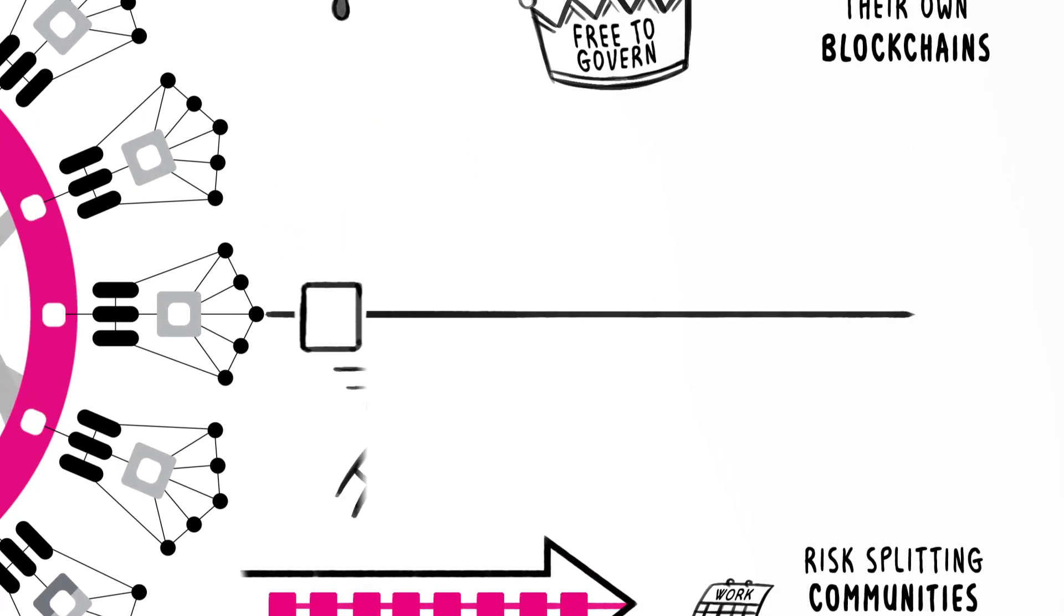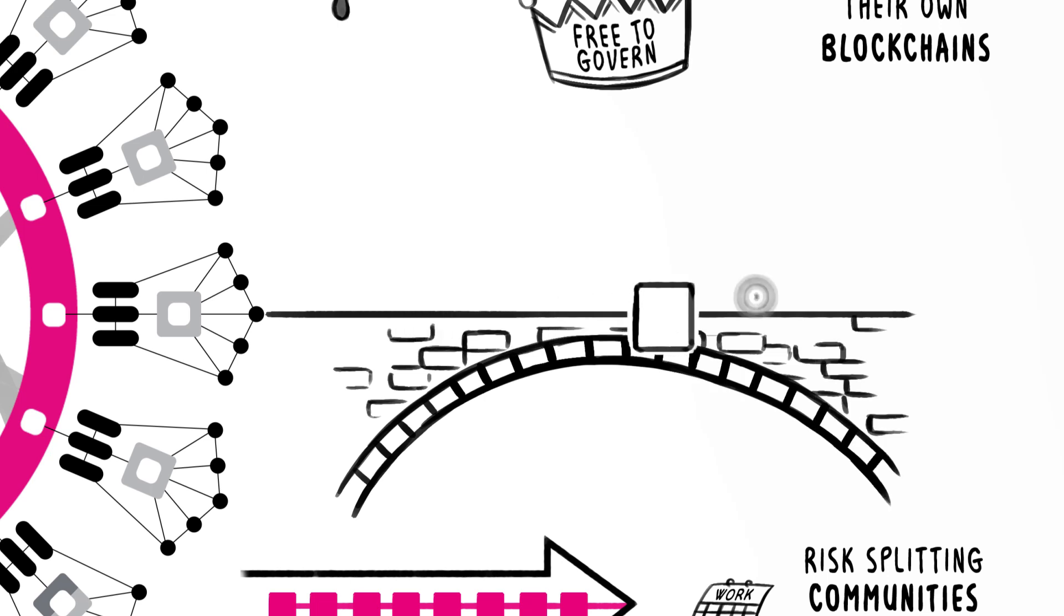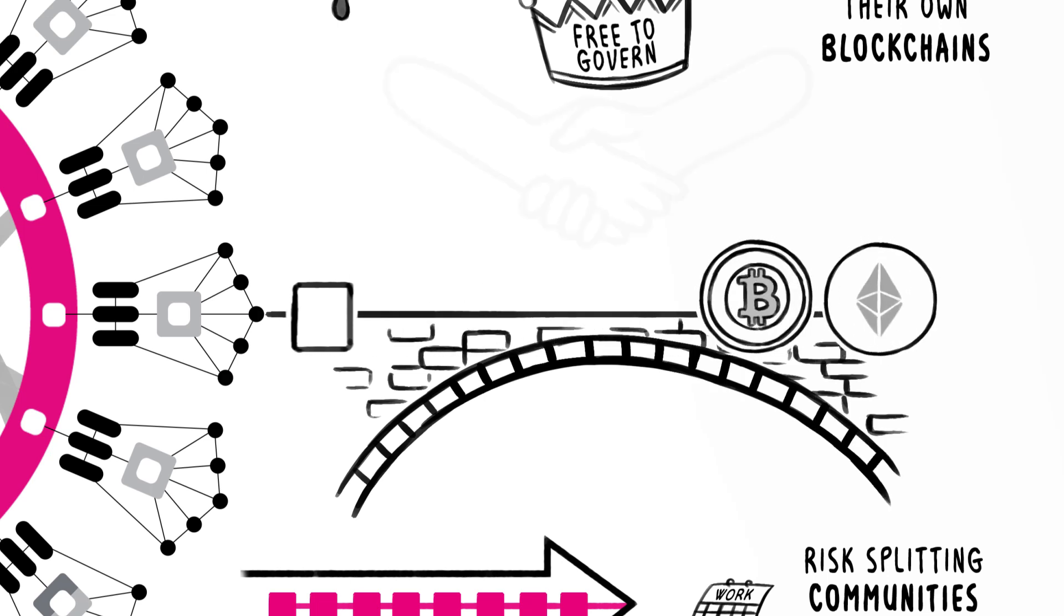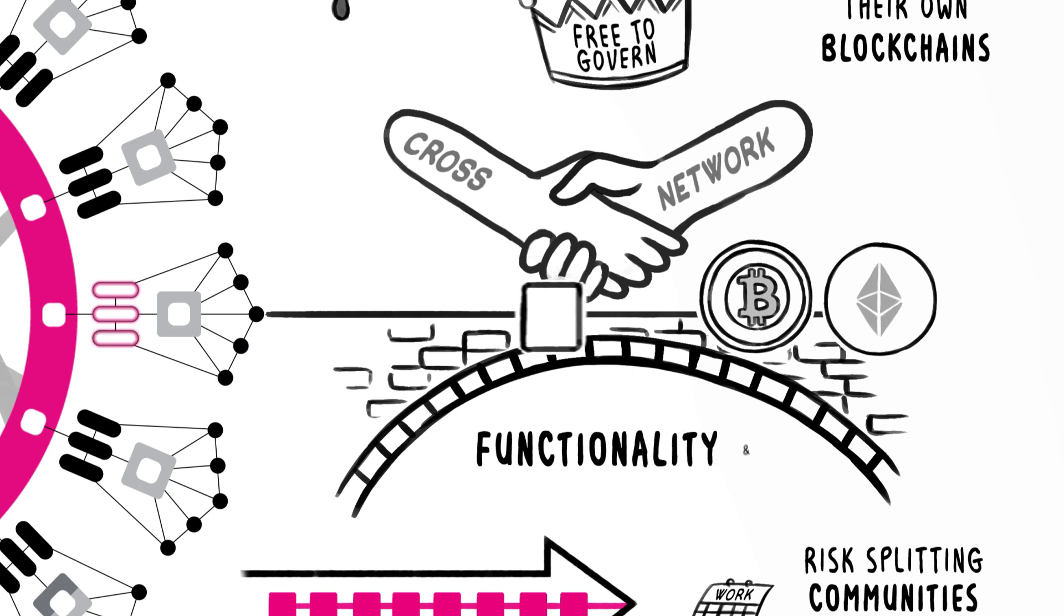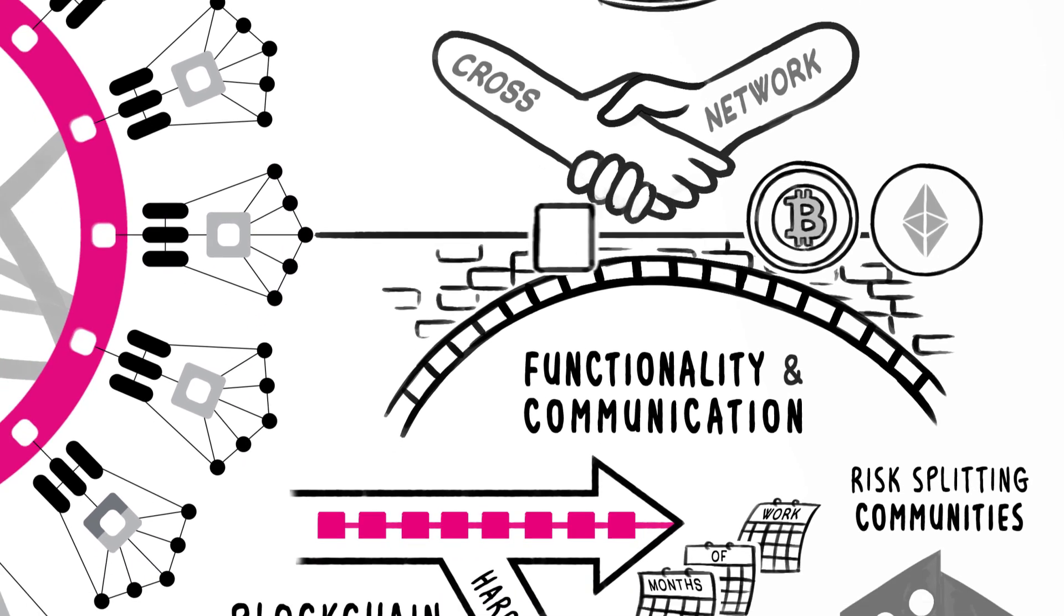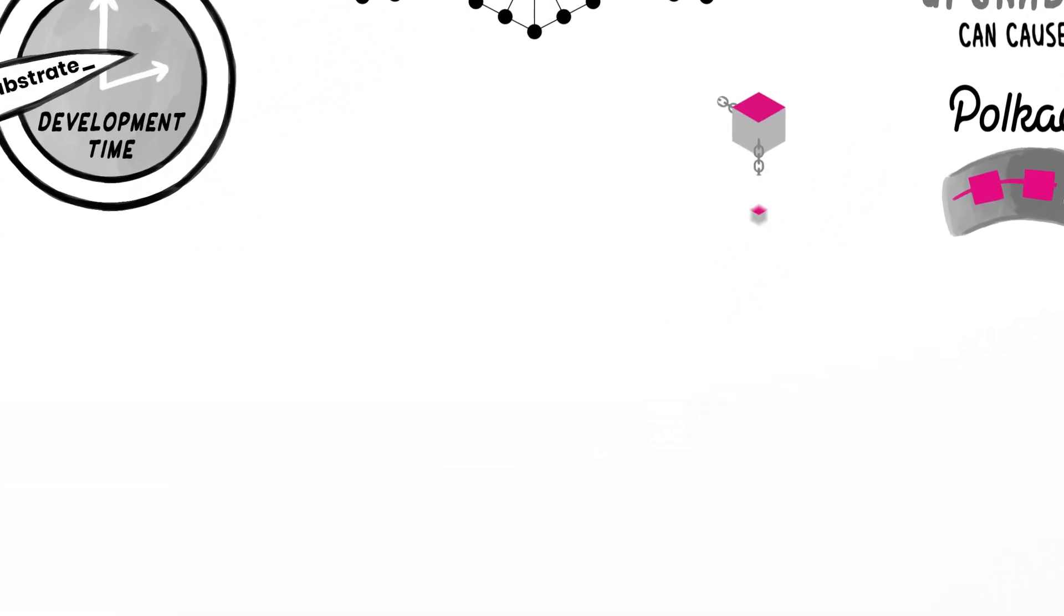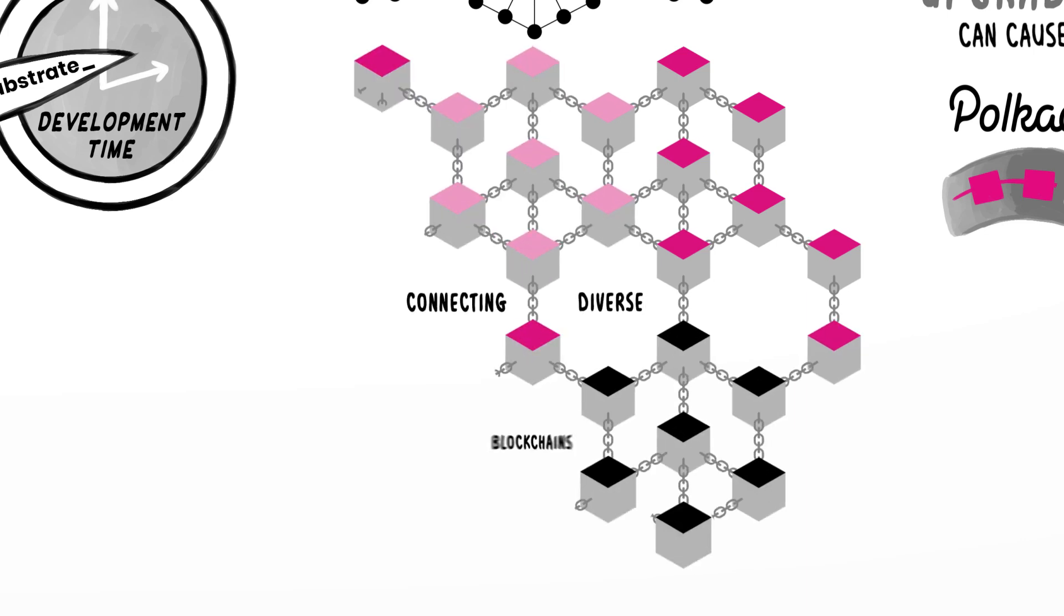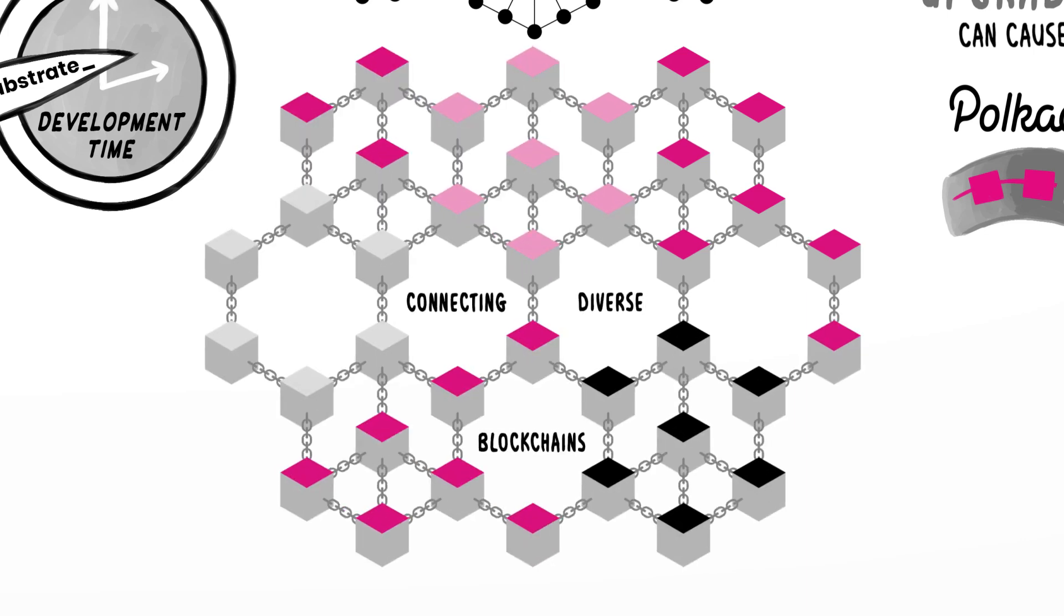Polkadot also enables bridges to other networks like Bitcoin or Ethereum for cross-network functionality and communication. Never before has there been a protocol for connecting diverse blockchains together, and allowing them to communicate safely with each other at scale in a decentralized way.